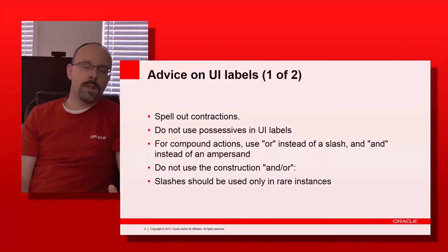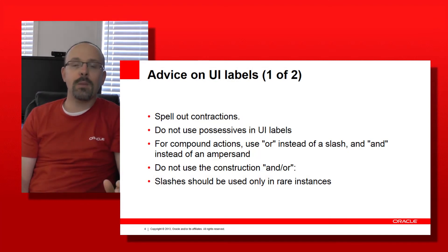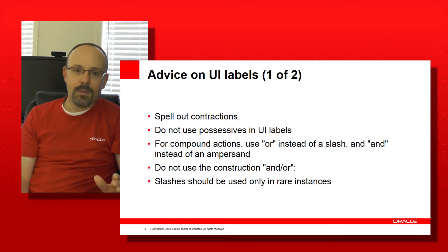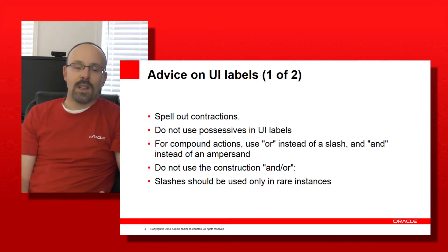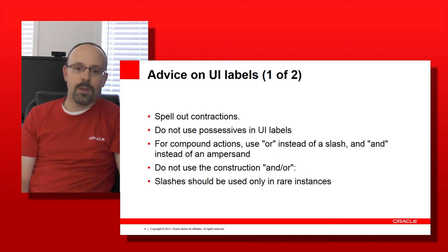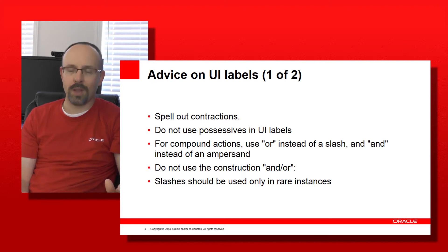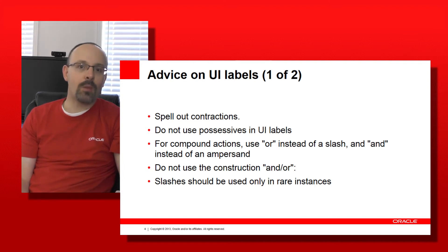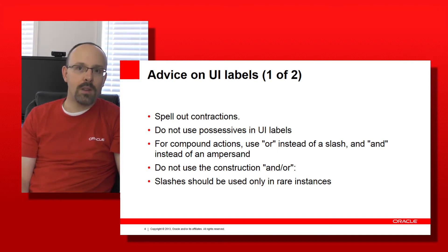User interface labels are really important to make your application usable, and there are some things you shouldn't do if you want them to translate correctly. Always spell out contractions — never use contractions in screens — and do not use possessives. When you have compound actions, use OR and AND if you are using English, and use the appropriate equivalent words in other languages.